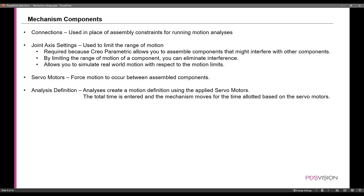There are some essential components to creating these. Connections are used in place of assembly constraints for running a motion analysis. There are also joint access settings, which are used to limit the range of motion. We have servo motors — basically simulated motors used in CREO to apply force or get angular motion. And we also have analysis definition, which creates a motion definition using the applied servo motors.